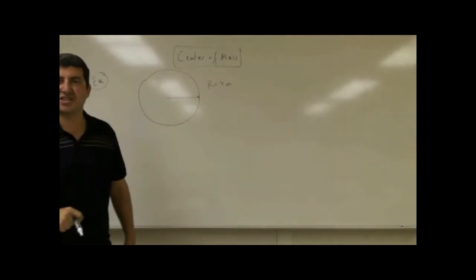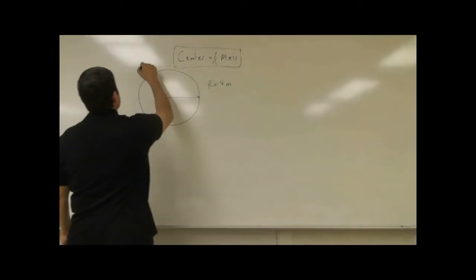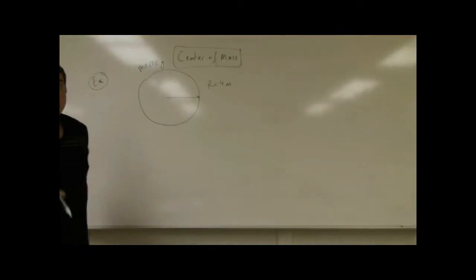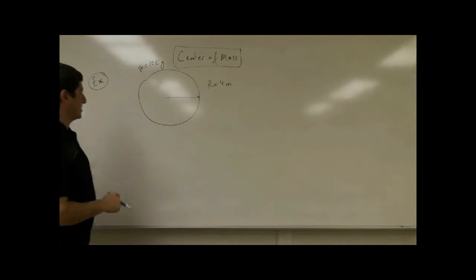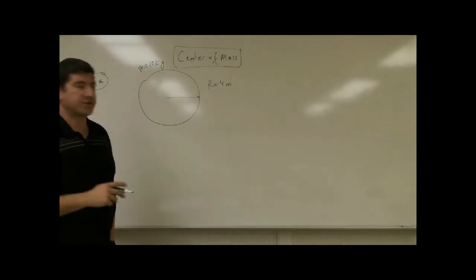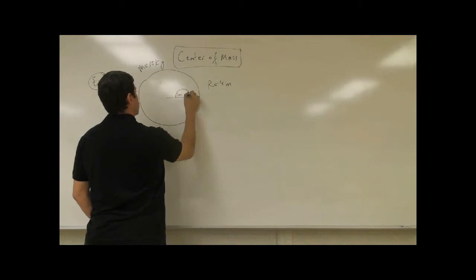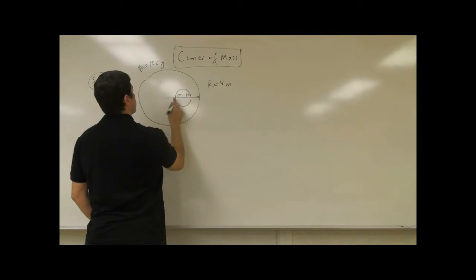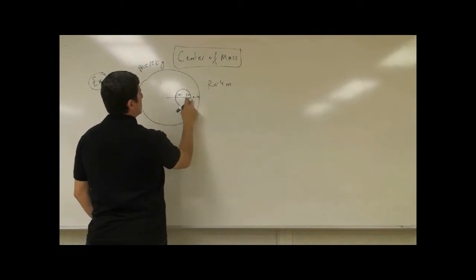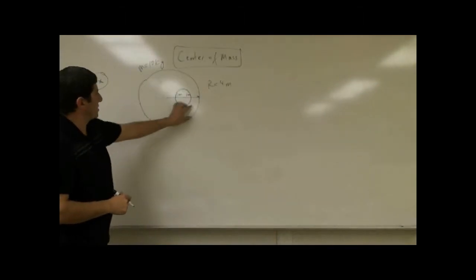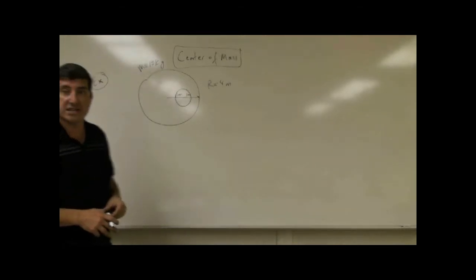Let's say the mass is 10 kilograms. Now let's say it has a cavity of radius 1 meter whose center is located 1 meter this way and 1 meter this way — so 2 meters from the center. The cavity starts 1 meter to the right and extends another 1 meter, giving a hole radius of 1 meter. The rest of the disc is solid. Where would the center of mass of this object be?